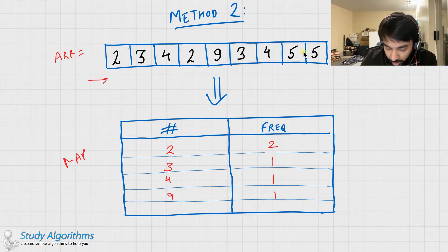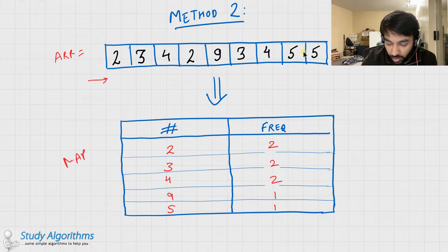You get number 9, and its frequency is again 1. You get number 3, so you would be updating this frequency to 2. You get number 4, you're updating this frequency to 2. Then you get 5, its frequency is 1, and then you get 5 again, so you update this frequency to 2.